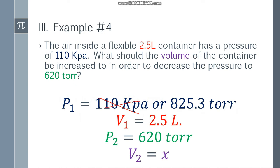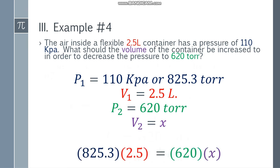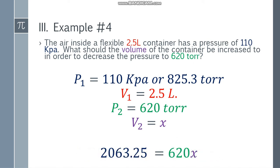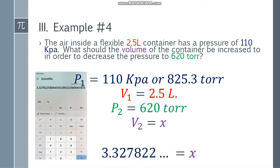Since we have the four variables, we can place the formula: P1 V1 = P2 V2. Substituting: 825.3 multiplied by 2.5 equals 620 times x. Simplifying the left side: 825.3 × 2.5 = 2063.25, which equals 620x. Dividing both sides by 620, x equals 3.327822.